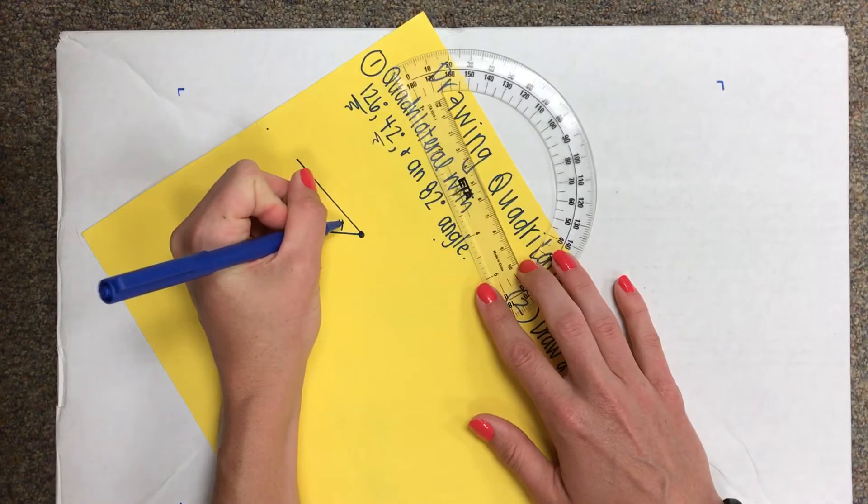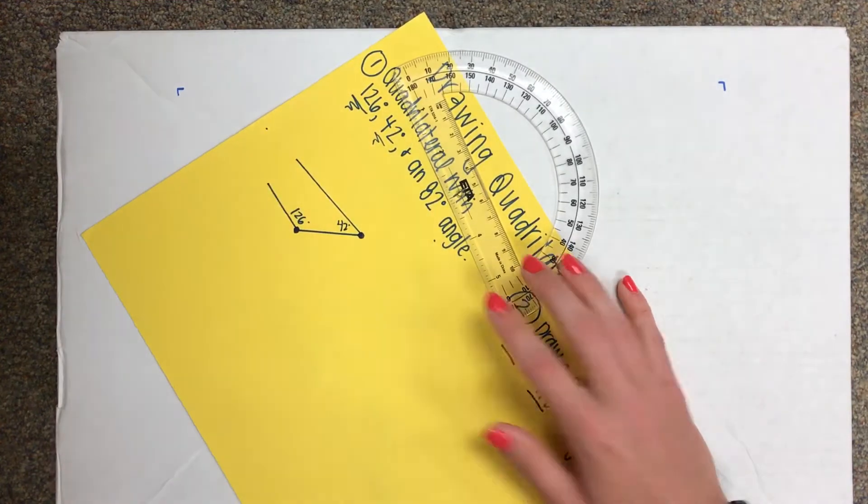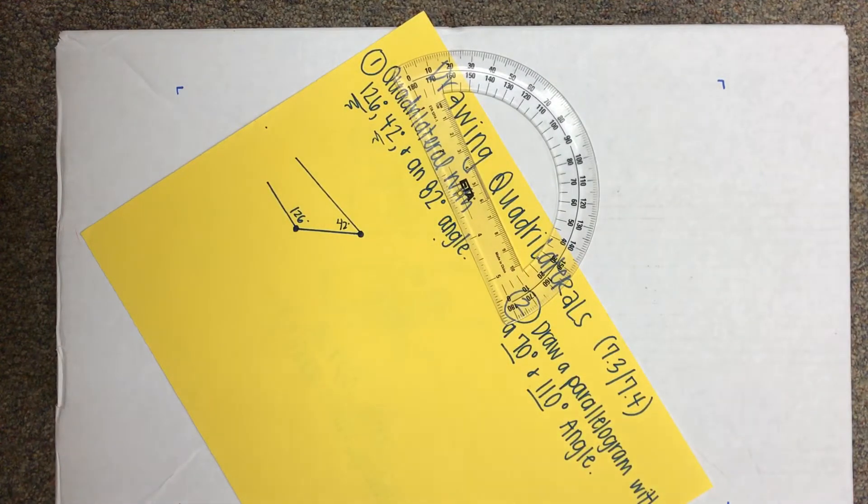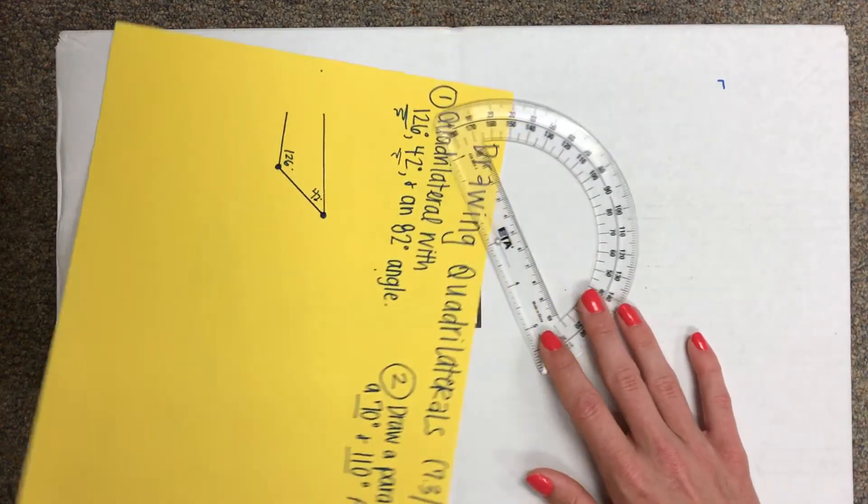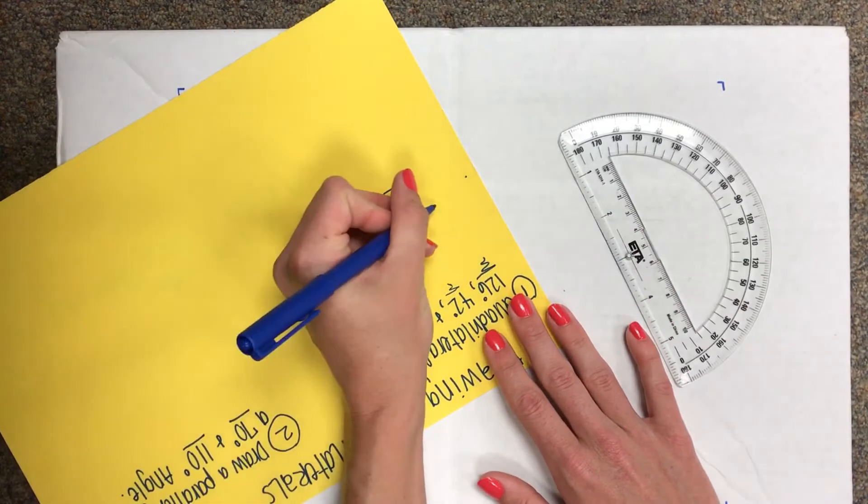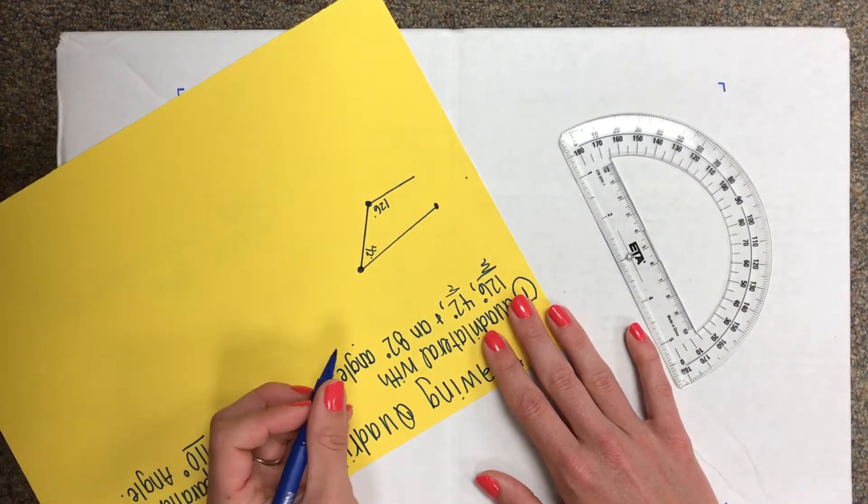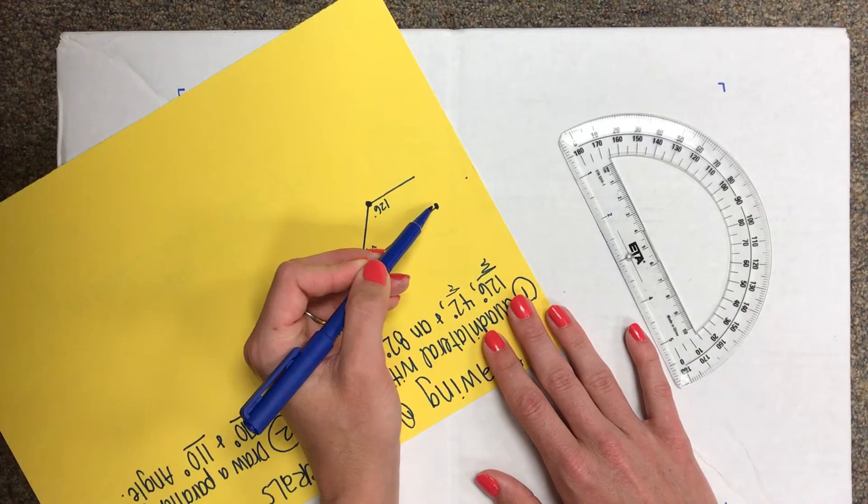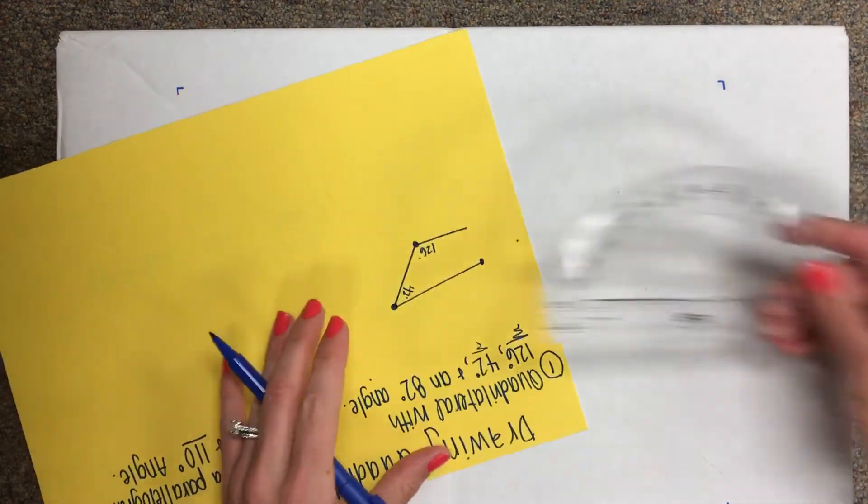Because a quadrilateral has four sides, we need to create three angles to enclose it. So I'm going to rotate my paper one more time. This new dot that I just marked becomes my new measurement, or my new dot for my measurement. And now I'm going to draw my 82 degree angle.